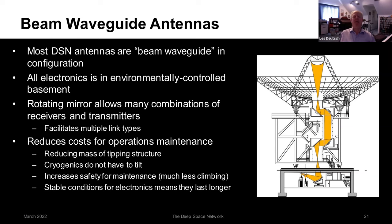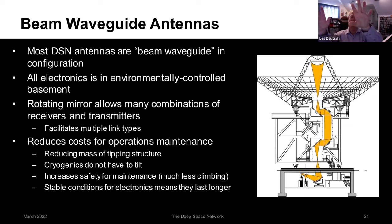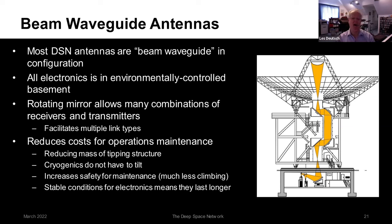Most 34-meter DSN antennas now use a beam waveguide design. Energy from deep space hits the main reflector, reflects to the sub-reflector, then is routed down through the antenna mechanics into an underground environmentally controlled room. This allows optimized, low-noise receivers that couldn't tolerate outdoor conditions. Multiple receivers optimized for different wavelengths are installed in the room; a rotating mirror in the basement selects among them, making the antenna more flexible and reducing maintenance costs.